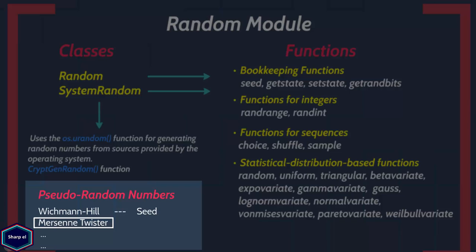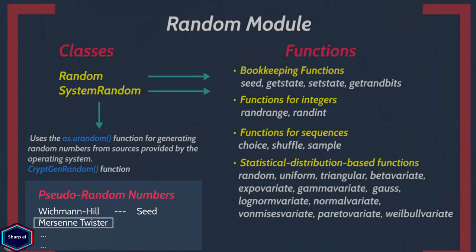But if you know the seed value you can reproduce the sequence. This makes Mersenne Twister not suitable for cryptography.